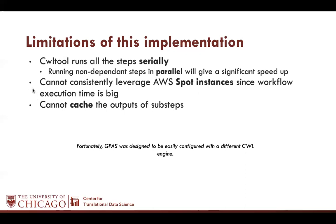Our implementation also cannot consistently leverage AWS spot instances since the workflow execution time is large. Right now the workflow engine doesn't understand the steps well enough to break them up — ideally it should dispatch smaller jobs to smaller instances and heavier jobs to bigger nodes, but that's not what we have now. Also, right now we cannot cache the outputs of sub-steps, again because we were running an older version of CWL-tool.